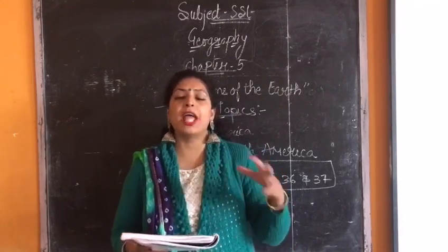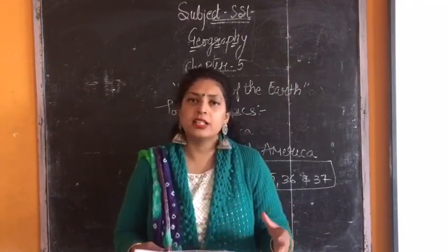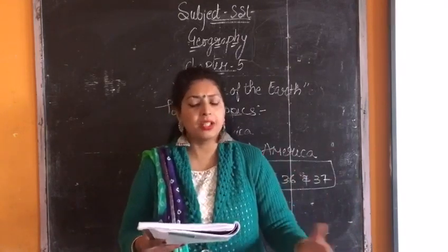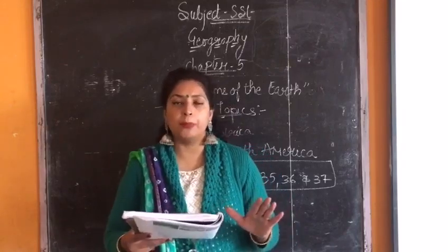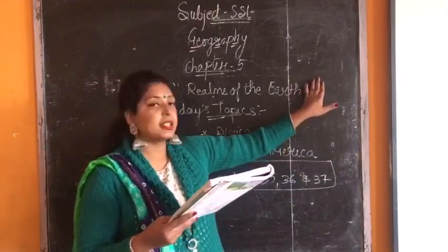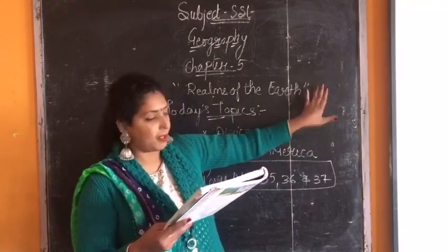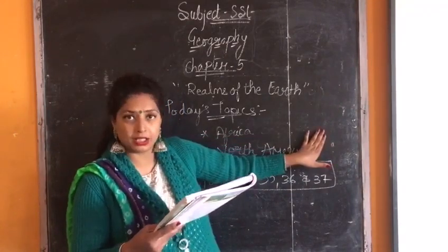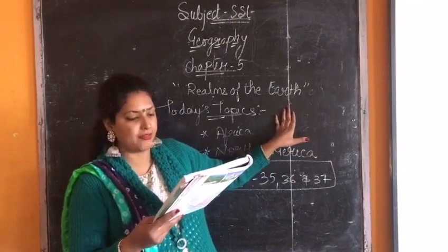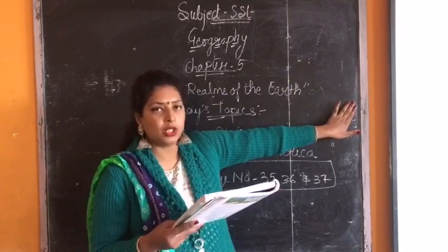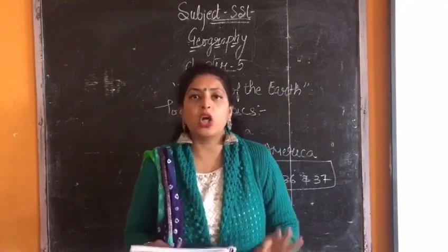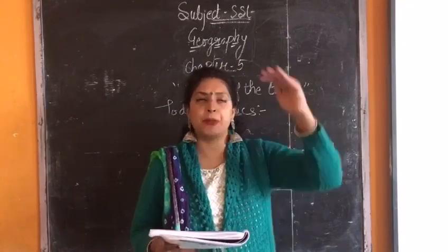Why do we call it the dark continent? On the globe, Africa extends from about 38 degrees north to 35 degrees south latitude. Going west, it covers up to 18 degrees as well.